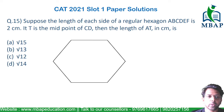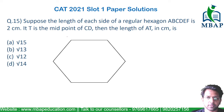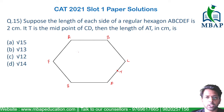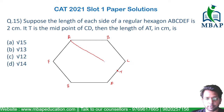Taking the next question: suppose the length of each side of a regular hexagon is 2 centimeters. Let's name this hexagon A, B, C, D, E, and F. The question says if T is the midpoint of CD, find the length of AT.